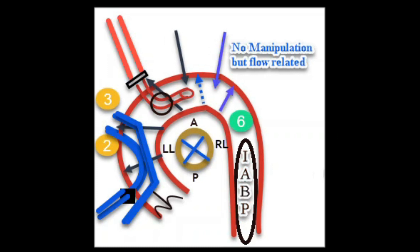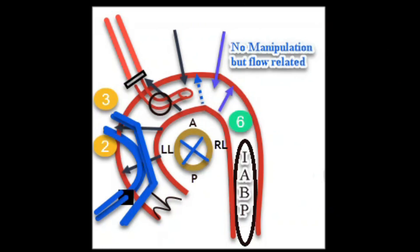The side-biting clamp is usually placed in zones 2 or 3, and any plaque in the posterior aspect is still safe for proximal anastomosis. In this paper, when performing an aortic no-touch technique (Lima-Lima-Y without touching the aorta), the risk of manipulation was only 5 out of 68 patients, compared to 21 out of 68 patients when placing proximals on the aorta with a side-biting clamp. The more you manipulate the aorta, the greater the risk of stroke.